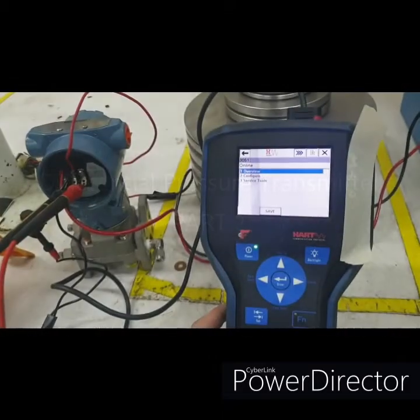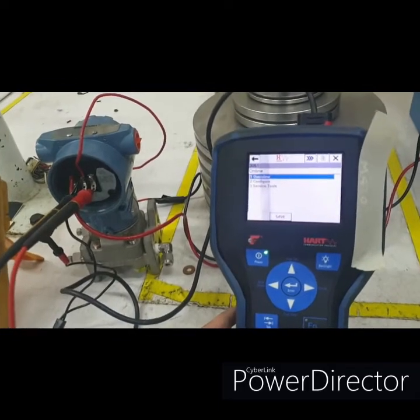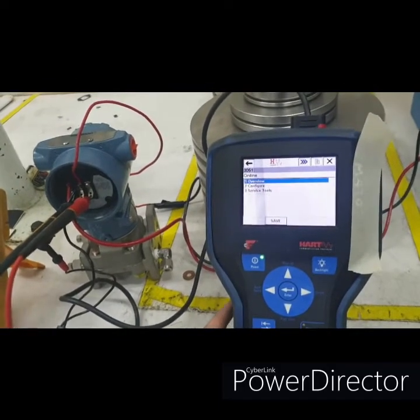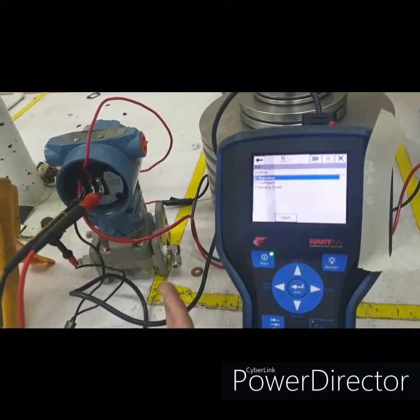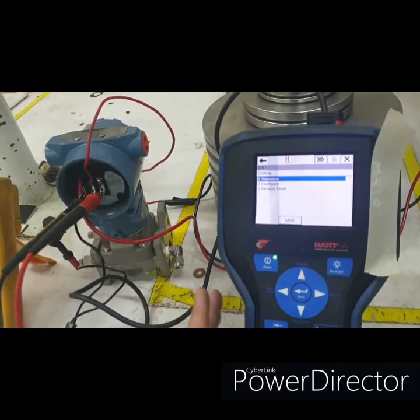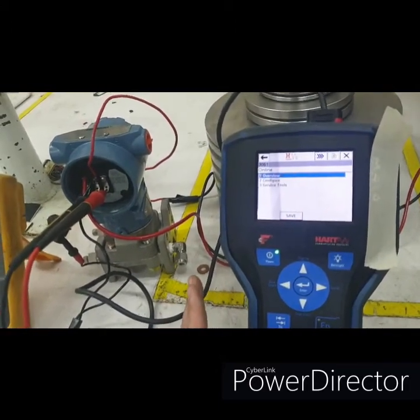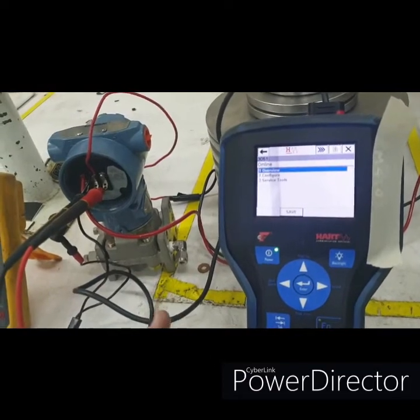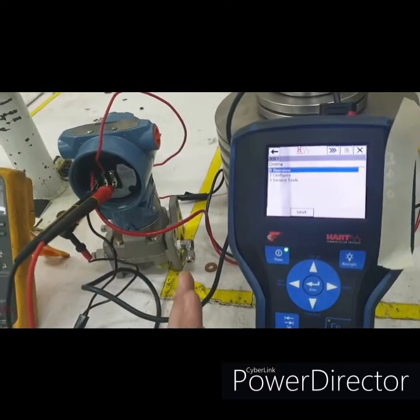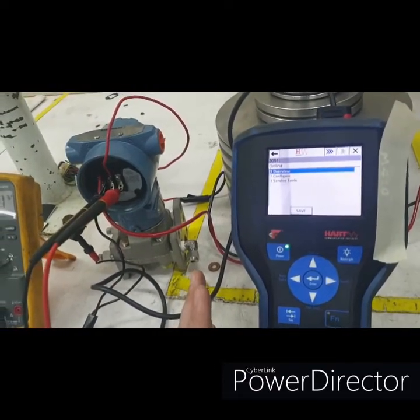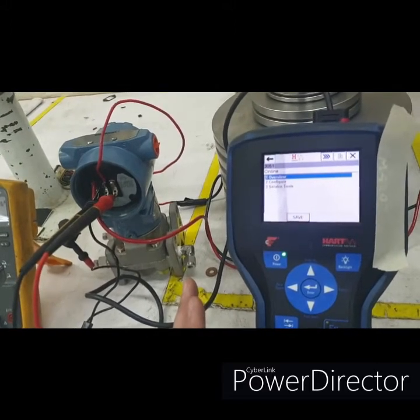Okay, so we will configure this transmitter according to our requirements. Let's say this transmitter we're gonna use in a filter that will monitor the differential pressure across the filter. So let's say the calibration range is 0 to 20 millibar.